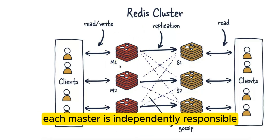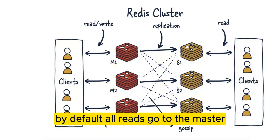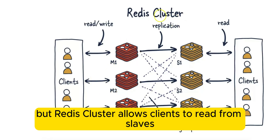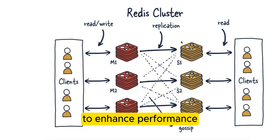Each master is independently responsible for its own shard of data. By default, all reads go to the master, but Redis cluster allows clients to read from slaves, offloading traffic from masters to enhance performance.